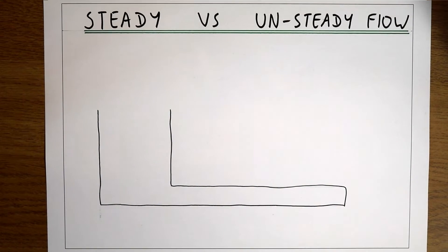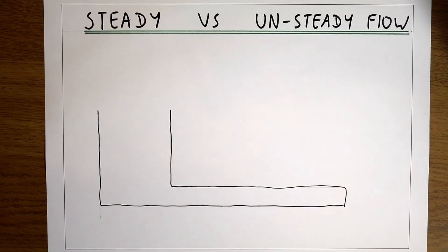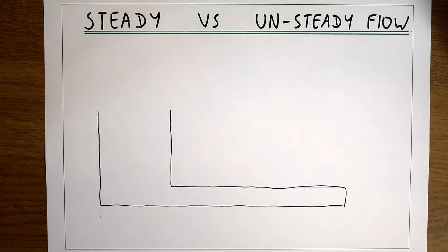In this video we're thinking about the difference between steady and unsteady flow. Steady flow is a flow where the flow parameters do not change with time, whereas unsteady flow is a flow where the flow parameters do change with time.